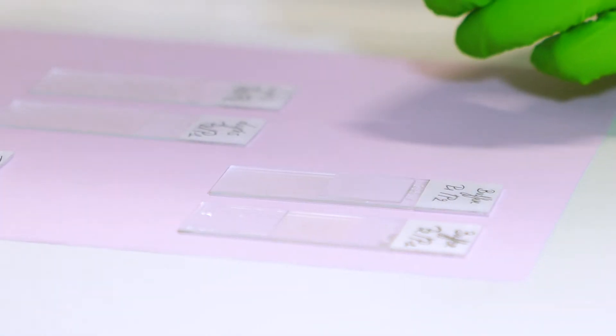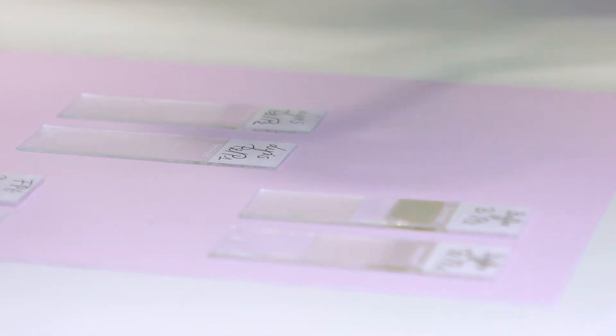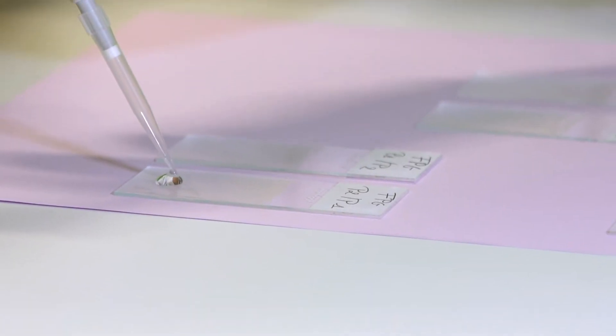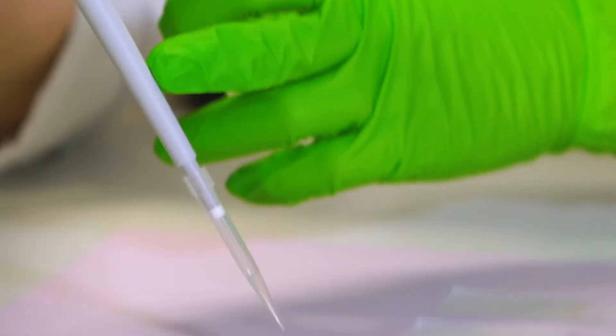Depending on which assay you're going to perform, either the BER or the NER assay, you have to embed the corresponding cells, so either the Rho or the UV exposed cells, in low melting point agarose.